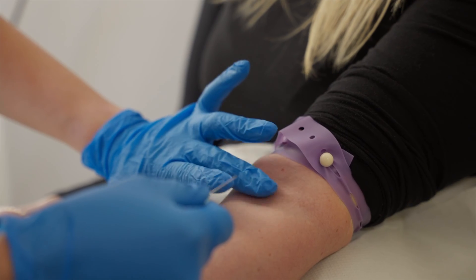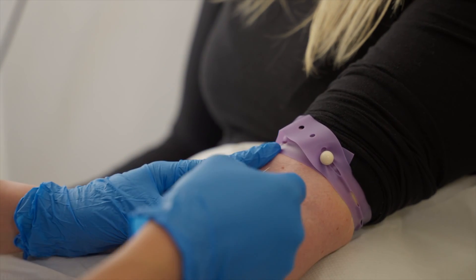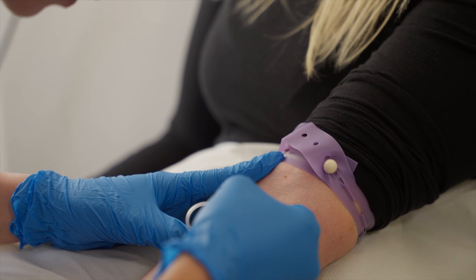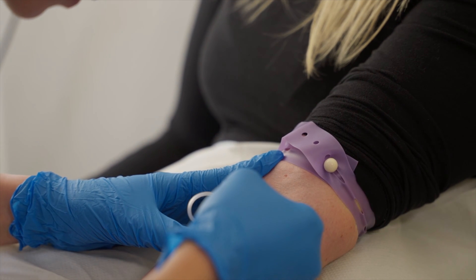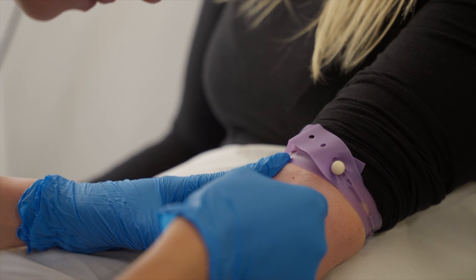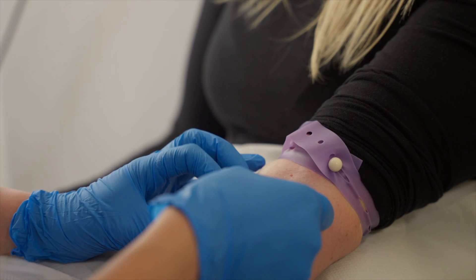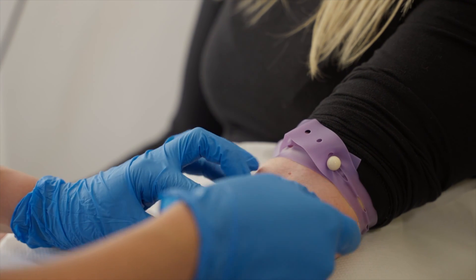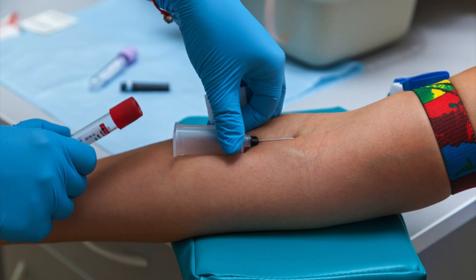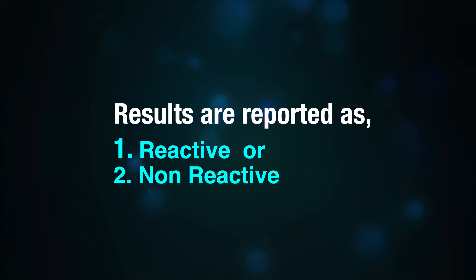The VDRL test involves drawing a blood sample from a vein, which is then processed in the lab to separate the serum. This serum is mixed with a reagent to check for the presence of non-treponemal antibodies through flocculation, which means clumping.